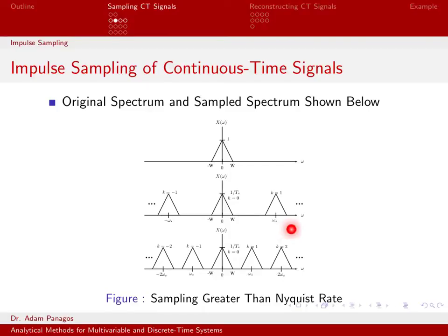So this triangle gets placed at 0 and omega s and 2 omega s, 3 omega s, etc. Also at minus omega s, minus 2 omega s, minus 3 omega s, etc. We have an infinite collection of them.